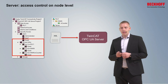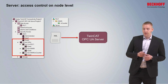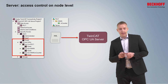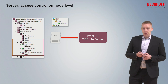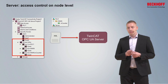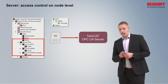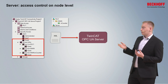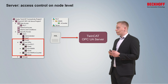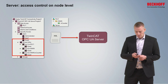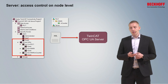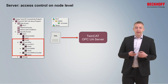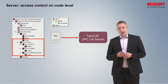Access control on variable level can get very complex with an increasing number of variables and users. Our recommendation is to stay on namespace level with restrictions as long as possible. The security configuration is stored as an XML file — the TwinCAT OPC UA configurator is the UI to edit it, but it is also possible to create and edit this XML file in your own application.